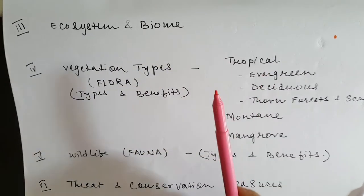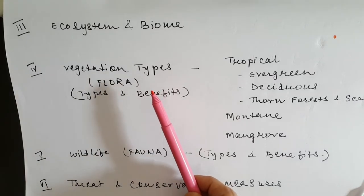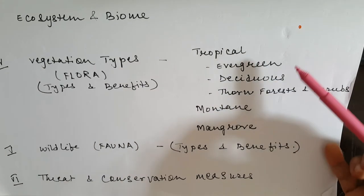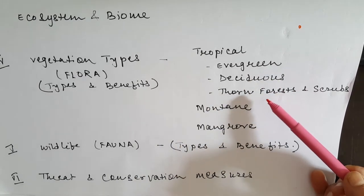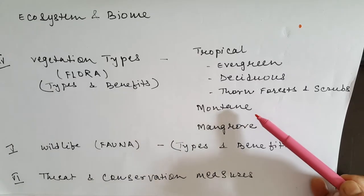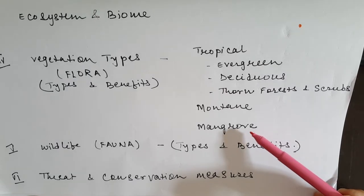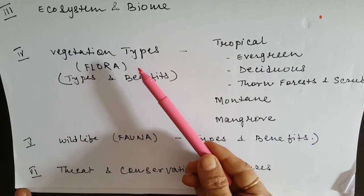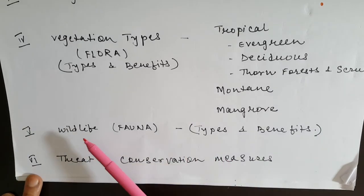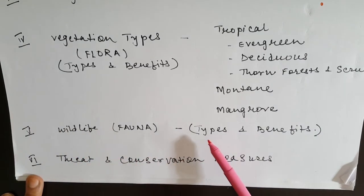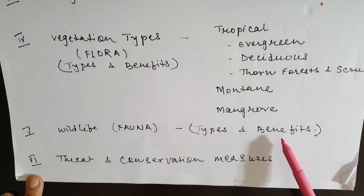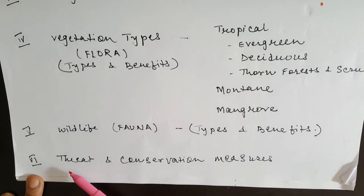India is a tropical country and the vegetation type is mainly tropical, broadly categorized into evergreen, deciduous, and thorn forest or scrubs in the desert areas. India also has mountain features, so we have vegetation and animal life of mountain regions, and marshy areas such as delta areas of rivers have mangrove forests. We will also be studying about the threat and conservation methods for flora and fauna.